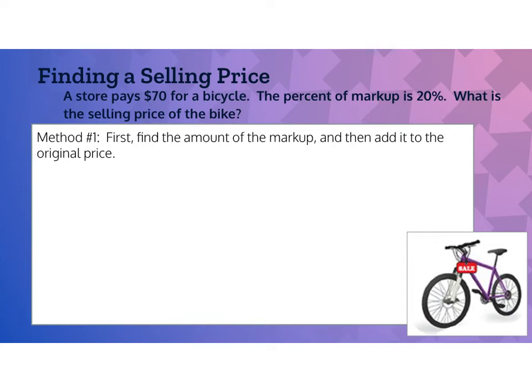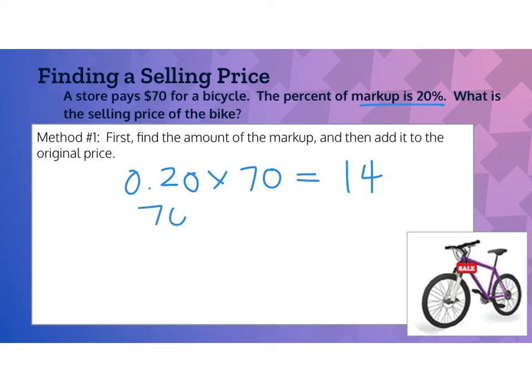There are two ways to solve this. The first method is to find the amount of the markup and then add it to the original price. The markup is 20%, so we multiply 20% by $70. 70 times 0.2 is $14. Since $14 is just the amount of the markup, we add $14 to the purchase price of $70, giving us a total selling price of $84.